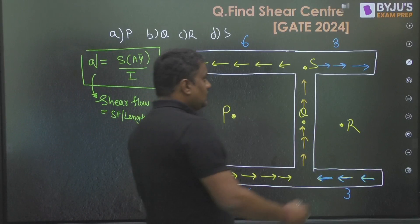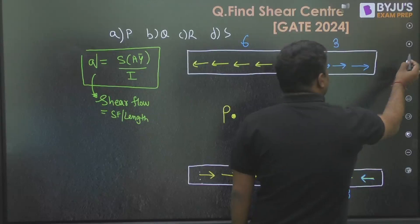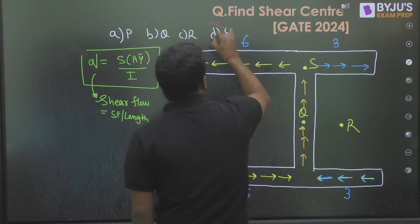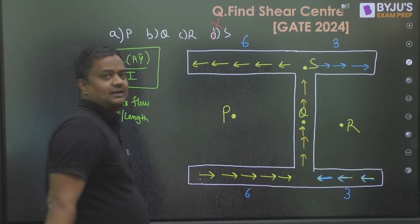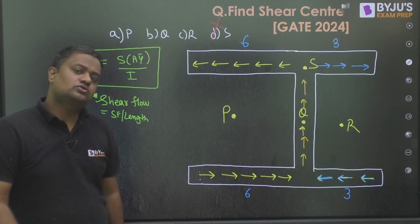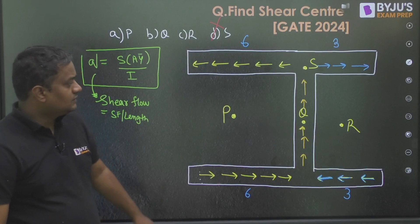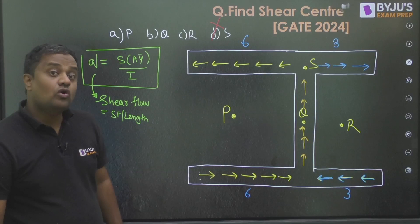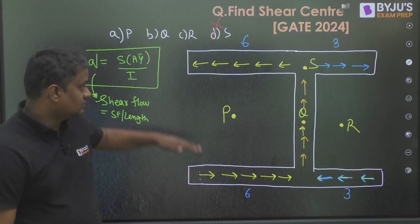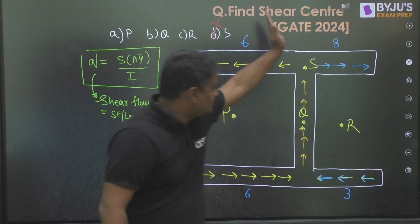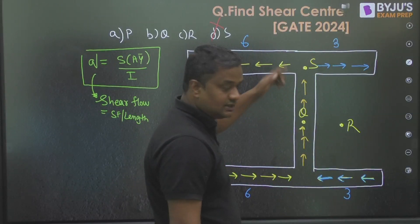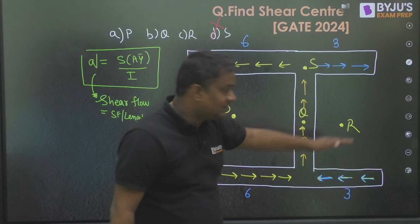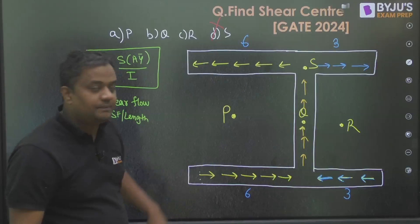First, students correctly identified that S cannot be the answer. The shear center always lies on the axis of symmetry. This section has 3 cm on one side and 6 cm on the other, so the horizontal is not an axis of symmetry — but the vertical axis is. Therefore the shear center will be at P, Q, or R, not S.